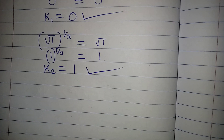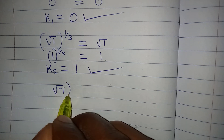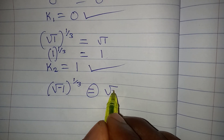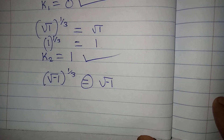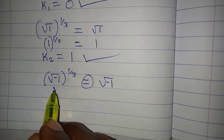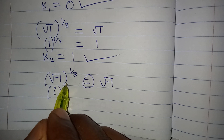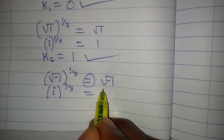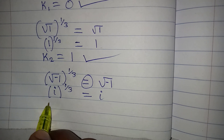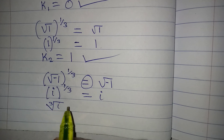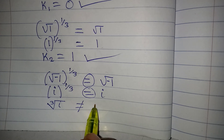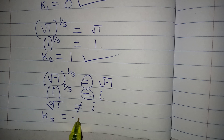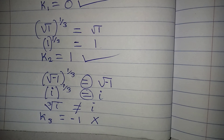For the third solution, k₃ equals negative one: we get the square root of negative one to the power of 1/3, which should equal the square root of negative one. The square root of negative one gives the imaginary number i, so we have i to the power of 1/3, which is the cube root of i. This is not equal to i, so k₃ equals negative one does not satisfy the equation. Thank you for watching.